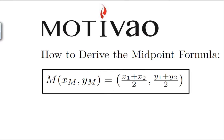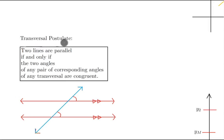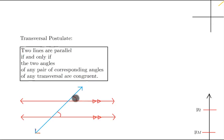To derive this formula, first we have to go to some geometry. The transversal postulate in geometry says that two lines are parallel if and only if any pair of corresponding angles of any transversal are congruent. We only need the part which says that if two lines are parallel, then the two corresponding angles are congruent. We're going to need this to prove our midpoint formula.